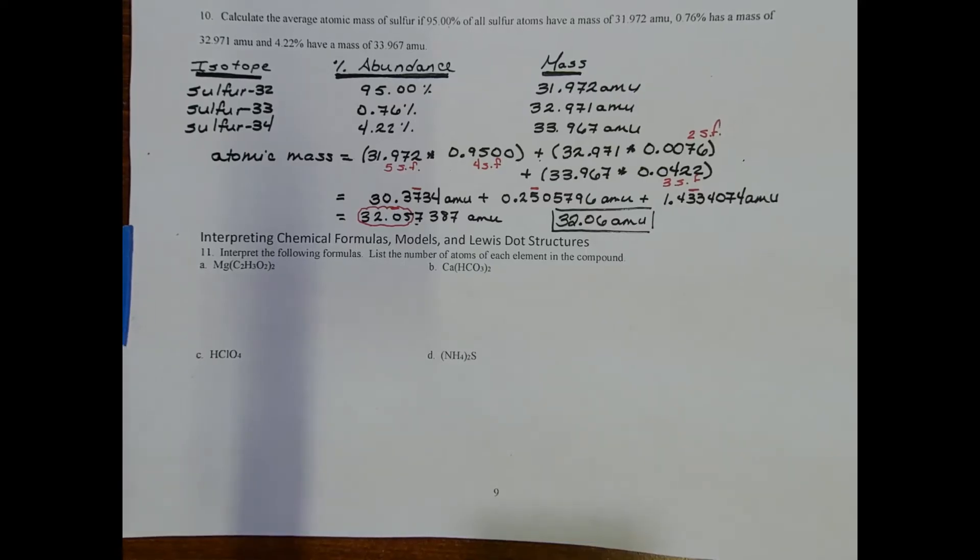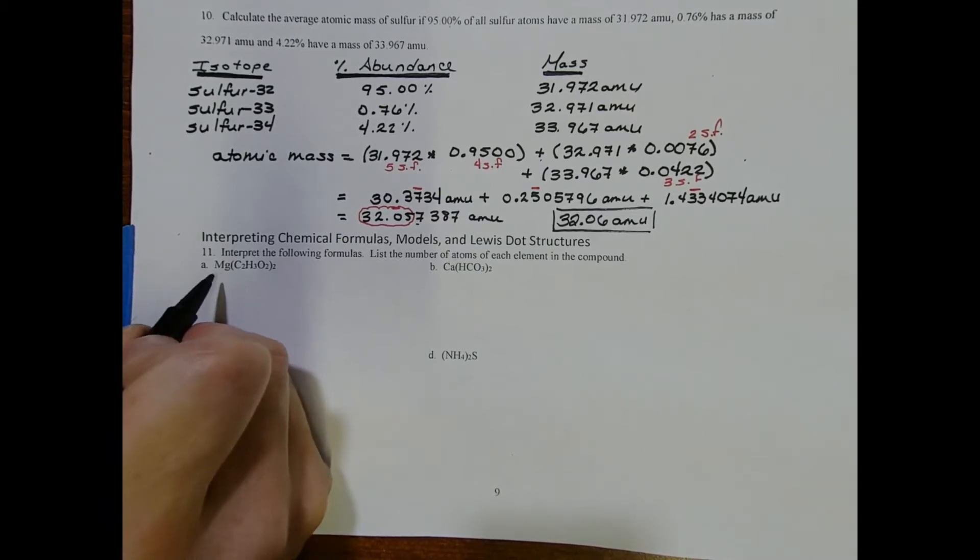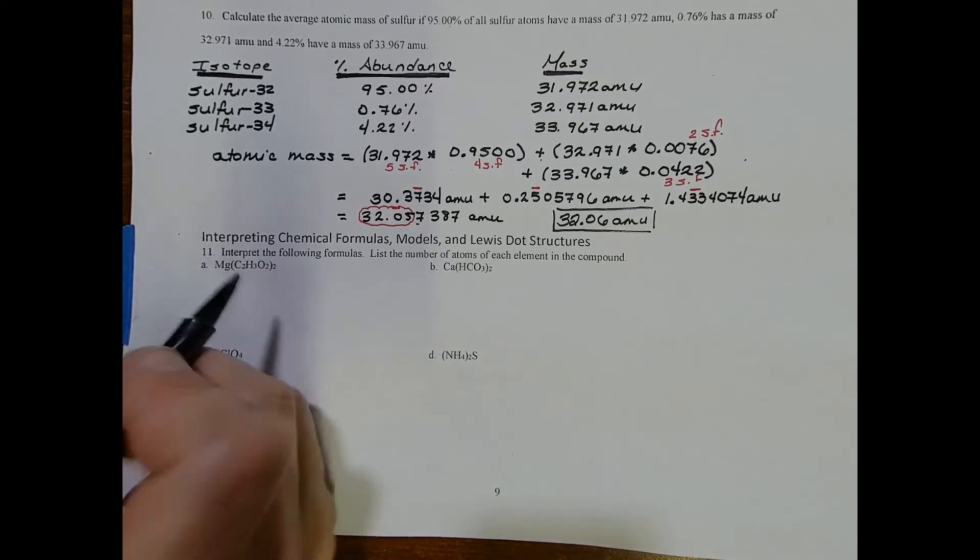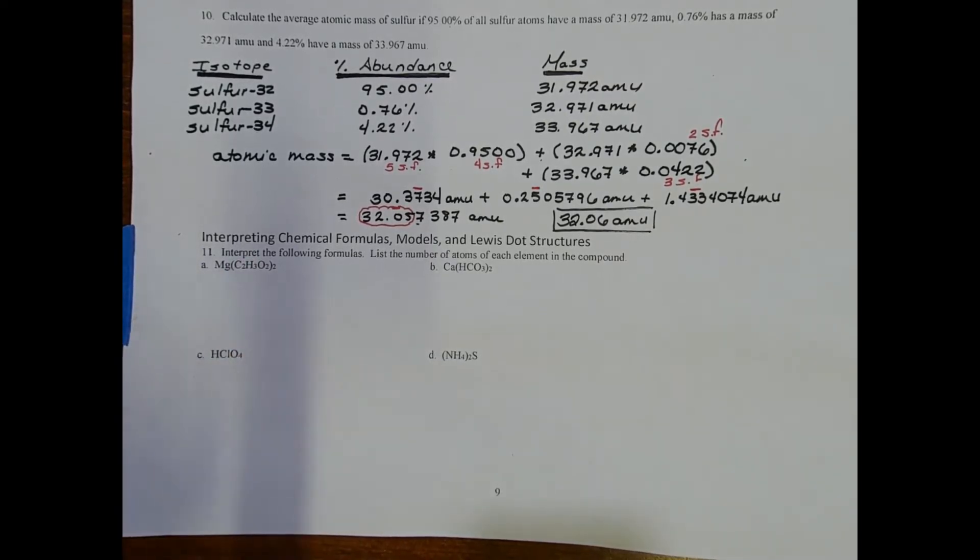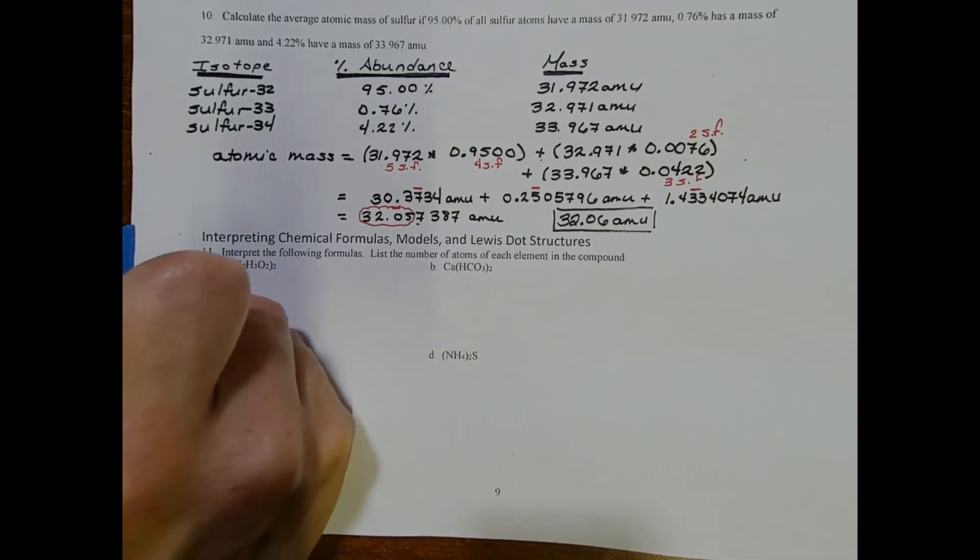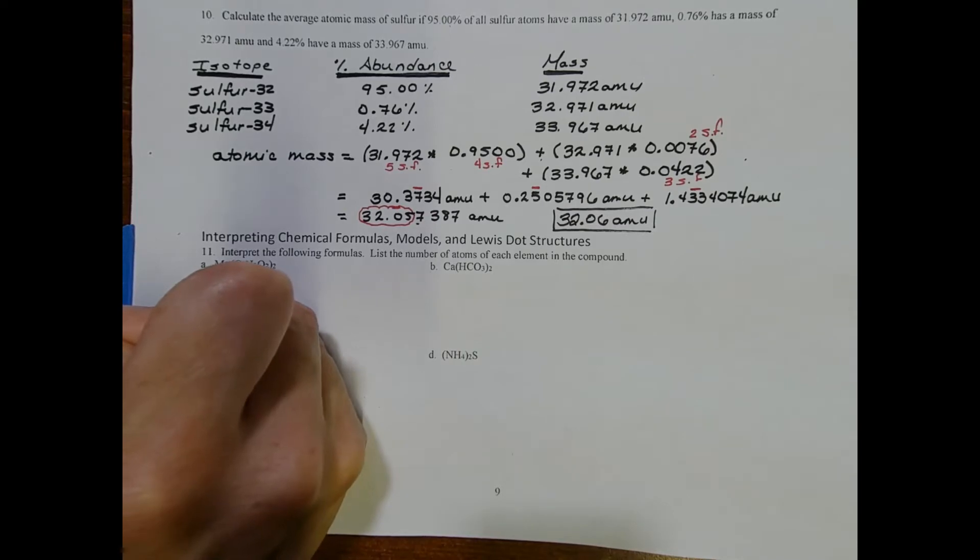Let's start working on the interpretation of formulas. You'll find formulas to resemble algebra quite a bit. The ones are understood, and if something's right next to the elemental symbol, like how there's a 2 right next to this carbon, then it applies specifically to that atom. However, if you see a set of parentheses, then that number has to be distributed to all of the elements in the parentheses.